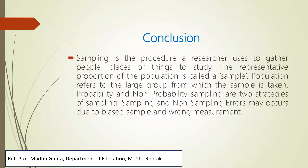In conclusion, sampling is the procedure a researcher uses to gather people, places, or things to study. The representative proportion of the population is called a sample. This kind of research is generally done more in arts and commerce — in psychology and commerce. Population refers to the large group from which the sample is taken. We have seen probability and non-probability sampling strategies, and we have also seen the errors — non-sampling and sampling errors — that may occur and give you biased or wrong measurements.